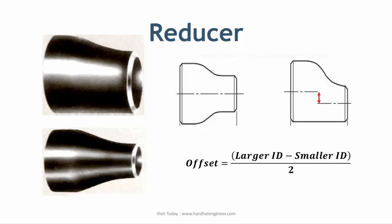Concentric reducers are used in pump and compressor discharge lines. Whereas in eccentric reducers, the center of both ends are on different axes, as shown in the image. This offset is half of the difference between the size of the reducer ends. Eccentric reducers maintain BOP — bottom of pipe — elevation of the pipeline, and are used in pump or compressor suction lines to prevent the accumulation of air pockets.